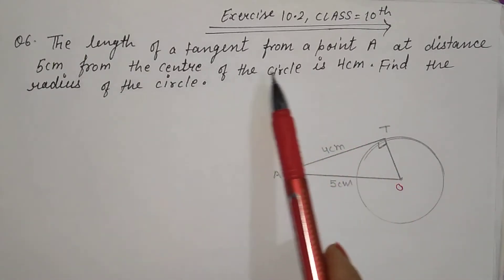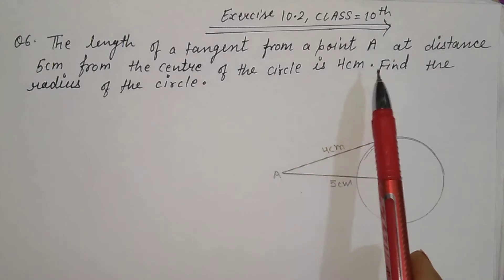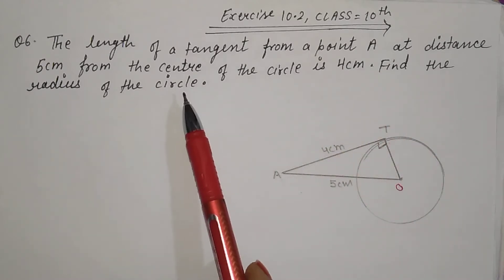From the center of the circle is 4 cm. Find the radius of the circle.